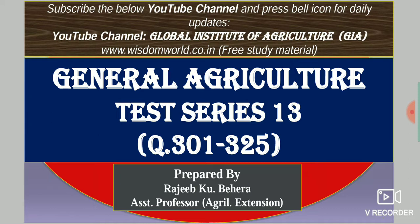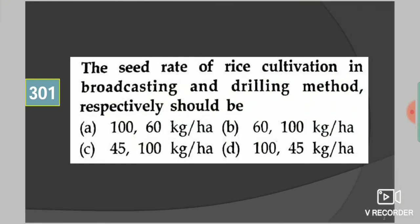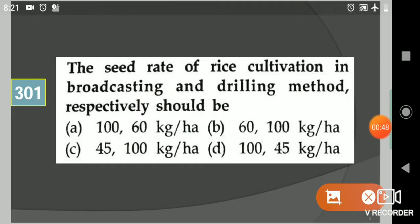So without any delay, let's start our test series. Come to the first question: The seed rate of rice cultivation in broadcasting and drilling method respectively should be? Your options are 160 kg per hectare and 60 kg per hectare, 100 kg per hectare and 45 kg per hectare, 100 kg per hectare and 145 kg per hectare. Your answer is the first option: 160 kg per hectare for broadcasting and 60 kg for drilling.